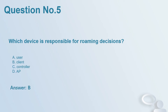Question number 5: Which device is responsible for roaming decisions in WLAN standards? A. User. B. Client. C. Controller. D. AP. Answer: B.